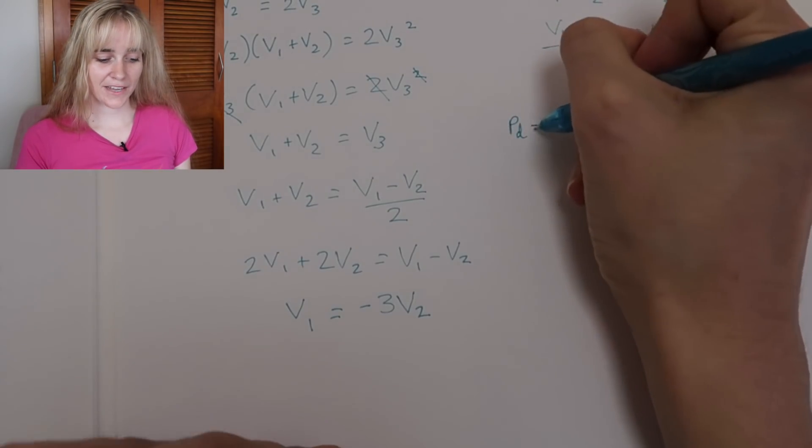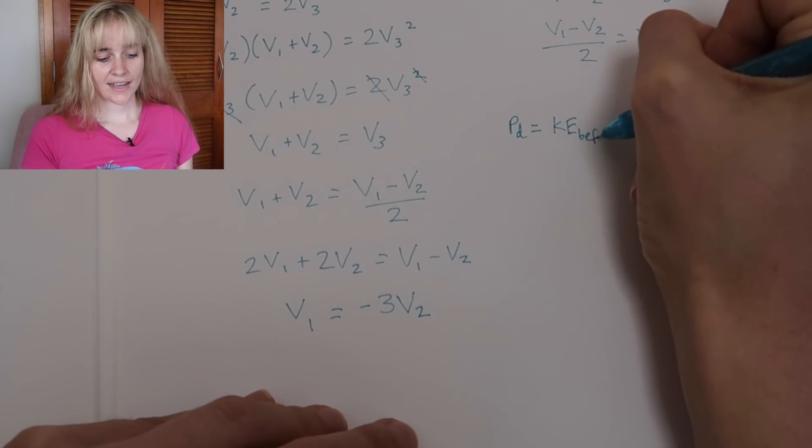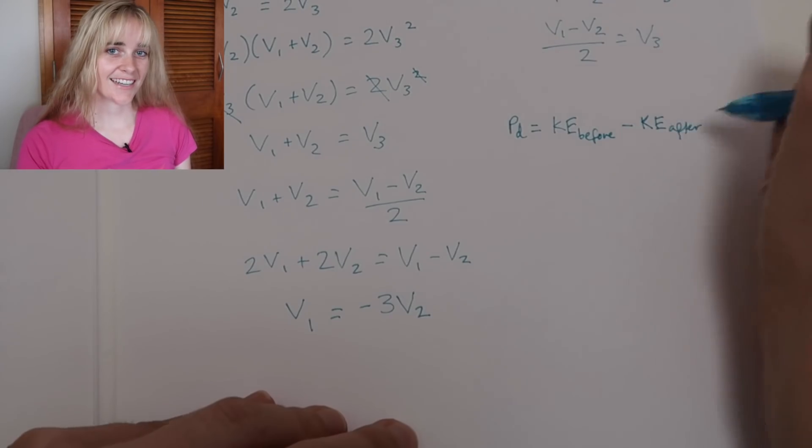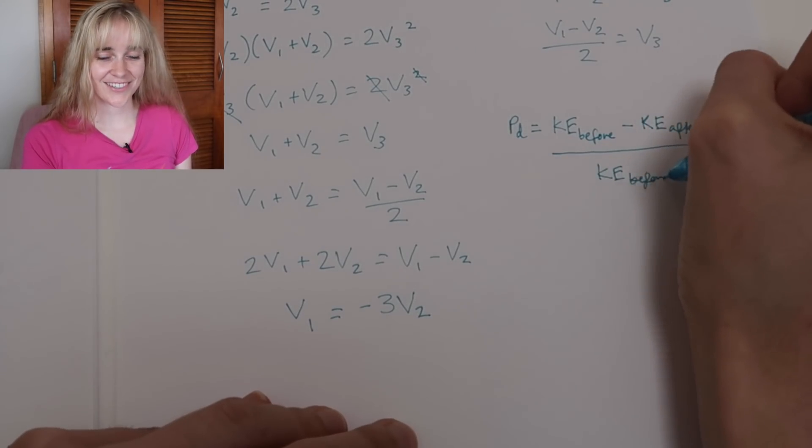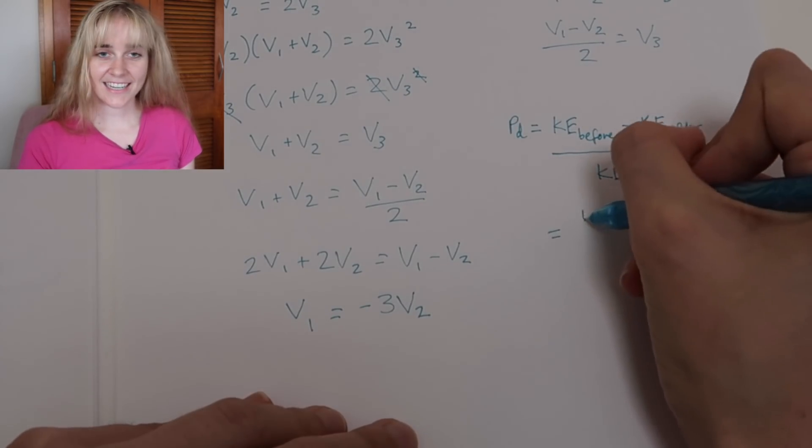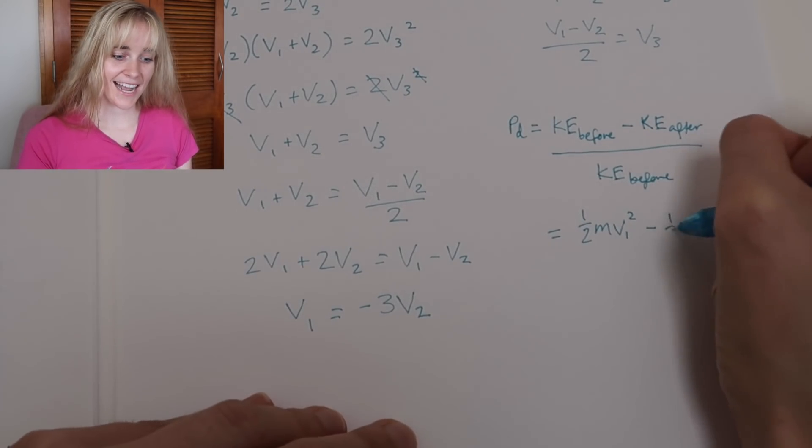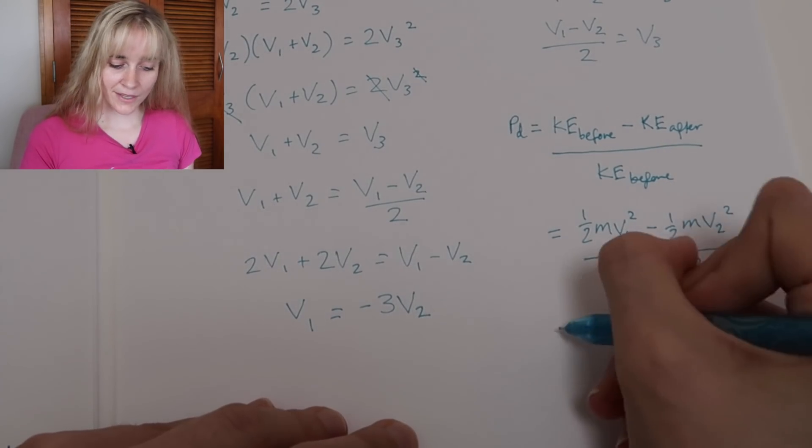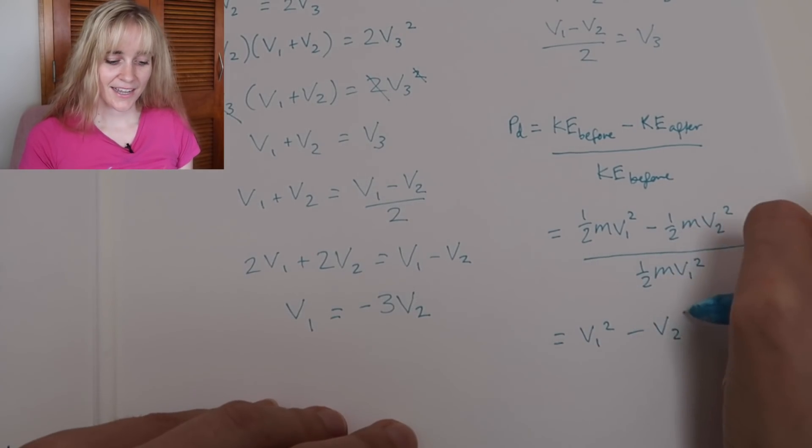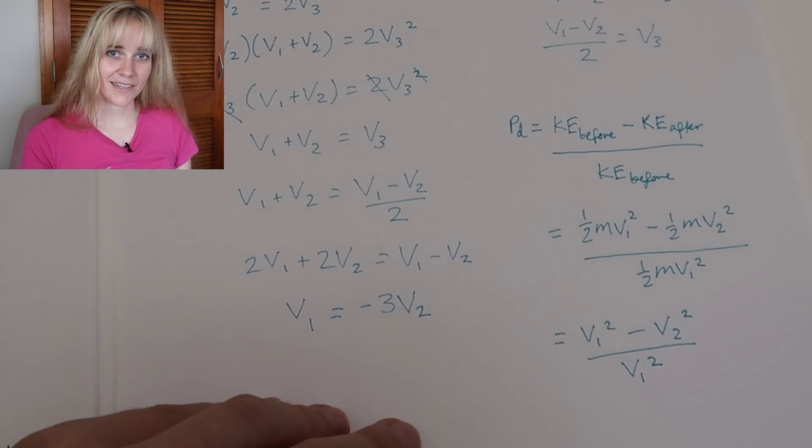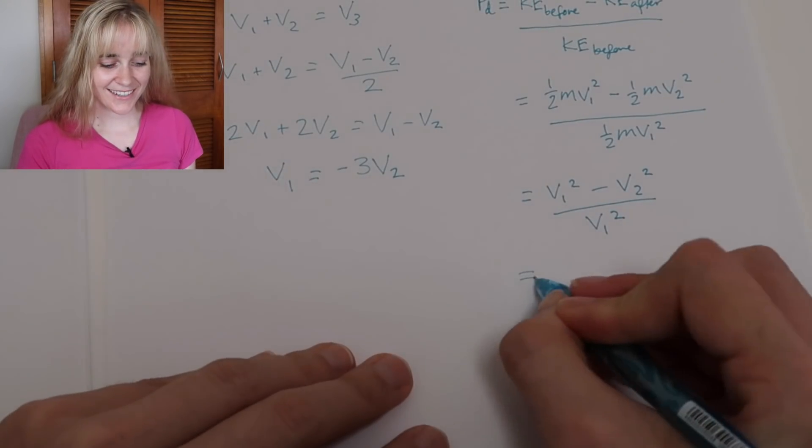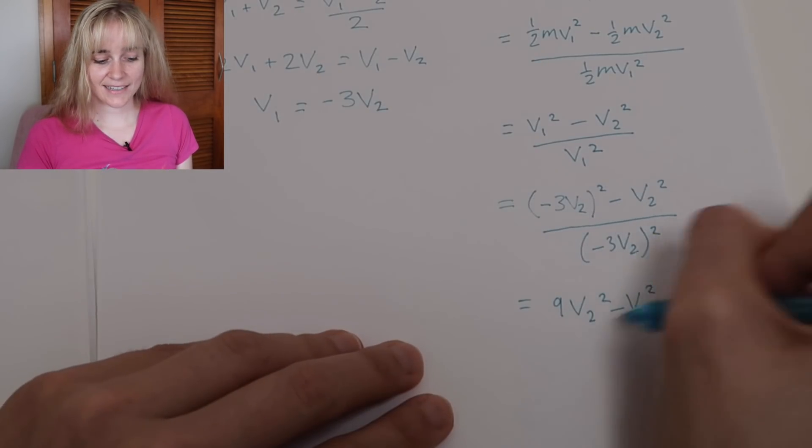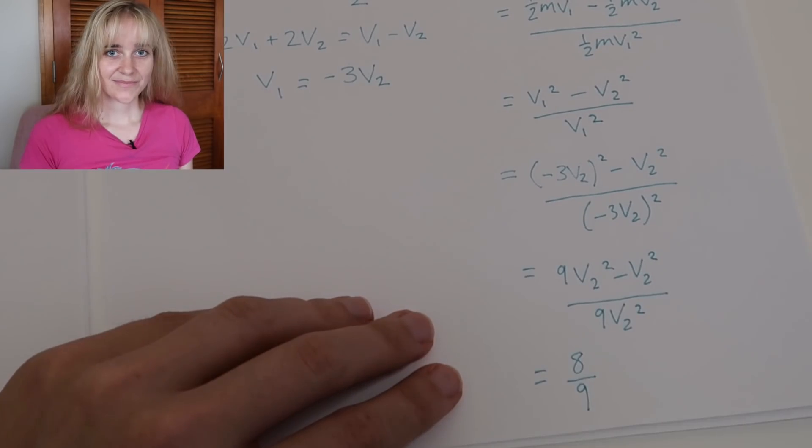Finding that fractional loss of energy, remember this is just for the neutron. We will take the neutron's kinetic energy before, subtract off the neutron's kinetic energy after, and divide it all by the neutron's kinetic energy before. So kinetic energy, a half mv squared, and actually writing that out and canceling those common terms of one-half m, we get v1 squared minus v2 squared over v1 squared giving us what we want to find. Now just sub in our relation between v1 and v2, do a little bit of arithmetic here, and we get that the final answer is 8 over 9.